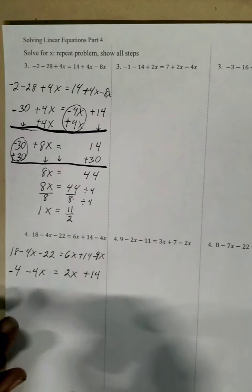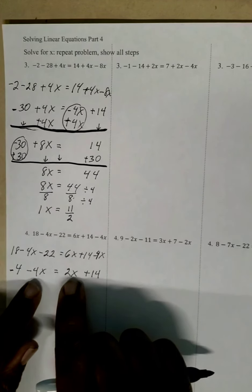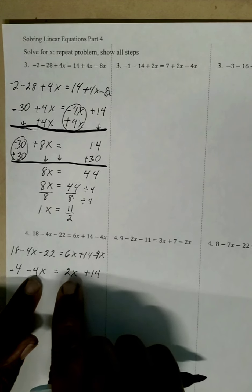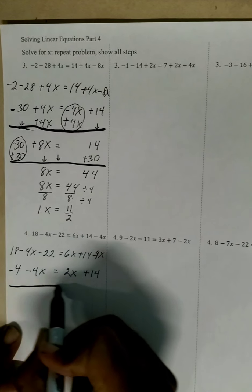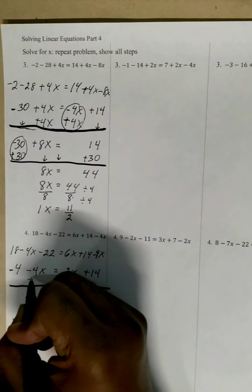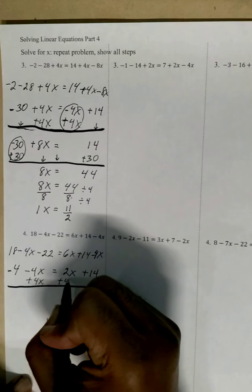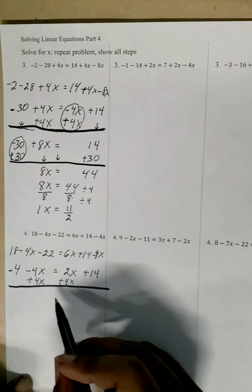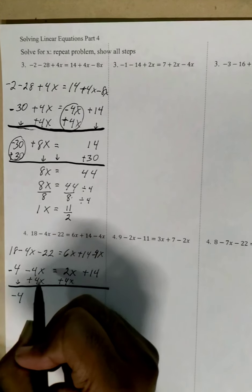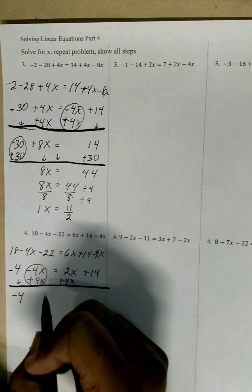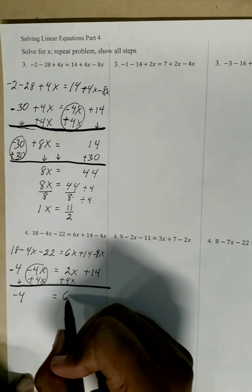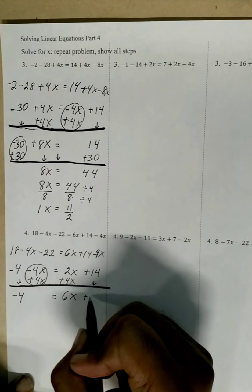Now we have x's on the left and right side. The weaker of the two x's is the negative 4x — positive 2x is bigger than negative 4x — so I'm going to put a plus 4x to get rid of it. What we do to one side we do to the other, so we add 4x on the right side. The negative 4 comes down, these two become zero, the equals comes down, same signs add so this becomes 6x, and we bring down the plus 14.